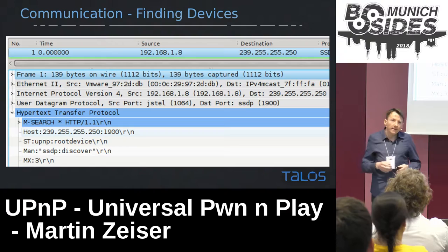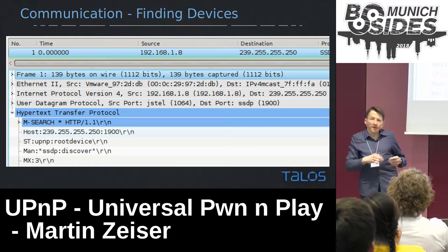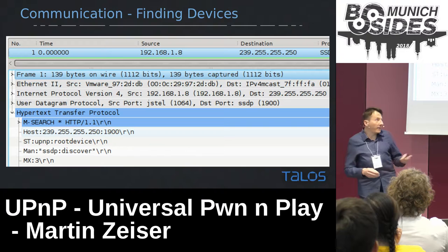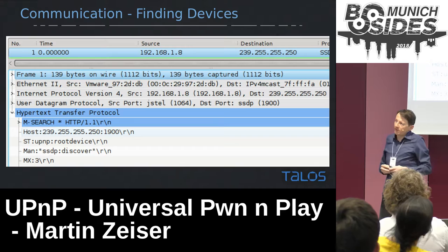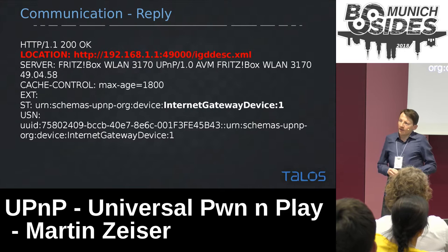How does it work? Basically, you have your operating system — let's say Windows — and it wants to find out what UPnP devices are on the local network. It sends out a single UDP packet on port 1900 to a multicast address. That's the M-SEARCH: are there any UPnP devices on this network? If so, please reply. And that's what you get back — a UDP reply coming from the devices.